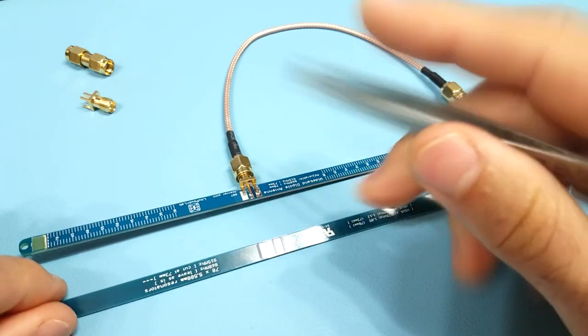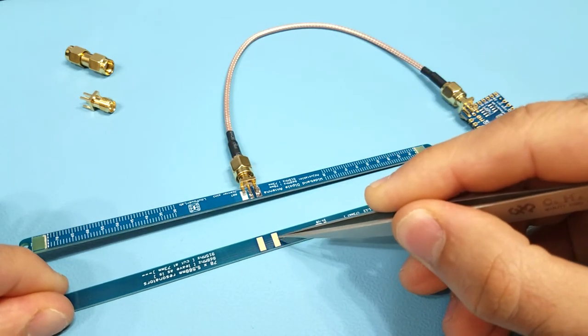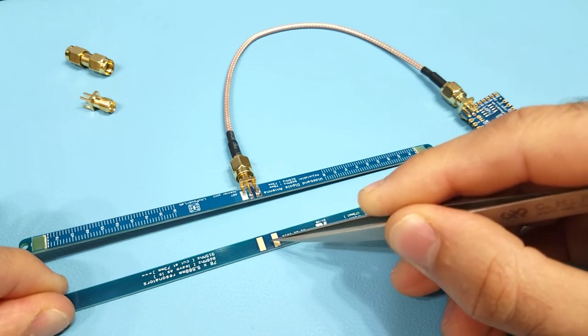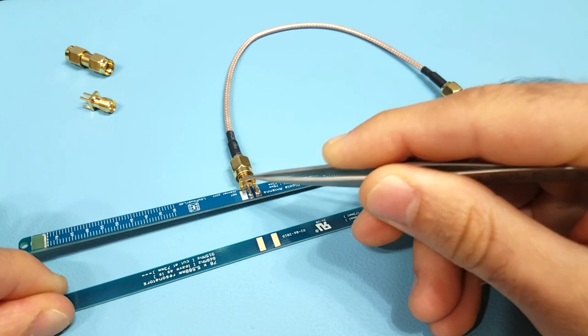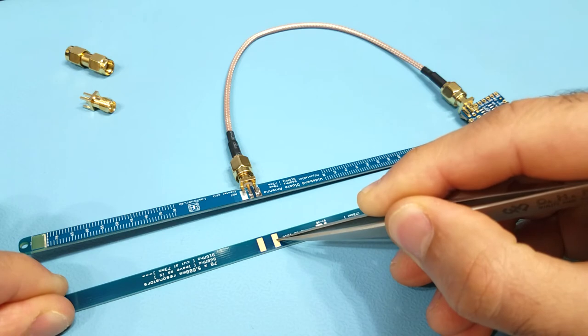On the bottom side there are only two pads provided and these are not connected to anything, so you can solder the SMA body pins to that just to keep it well secured.